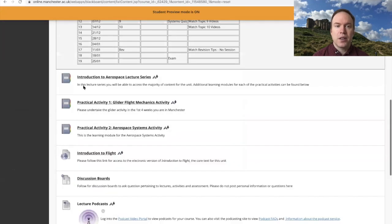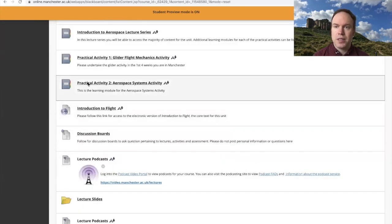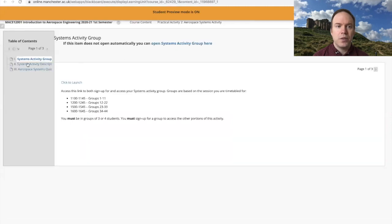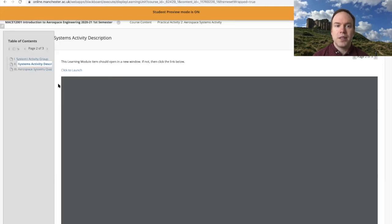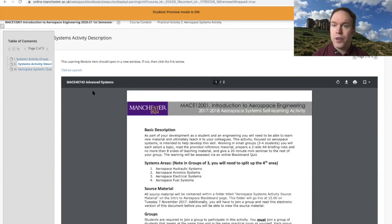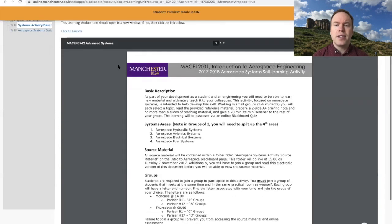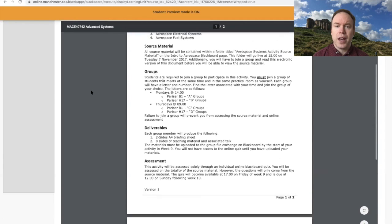Again, select Practical Activity 2 Aerospace Systems Activity learning module and we can go to the Systems Activity description, which you must read before you can access the source material. It's an easy read. It tells us what we're doing and how things work.